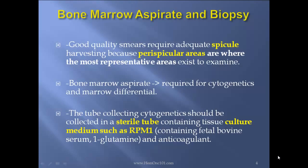Marrow aspirate and biopsy. Good quality smears require adequate spicule harvesting because perispicular areas are where the most representative areas exist to examine. Marrow aspirate is required for cytogenetics and marrow differential. The tube collecting cytogenetics should be collected in a sterile tube containing tissue culture mediums such as RPMI containing fetal bovine serum and L-glutamine.